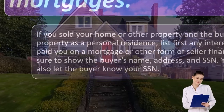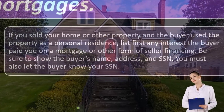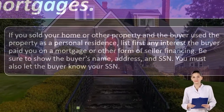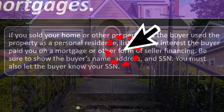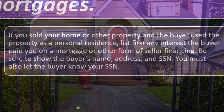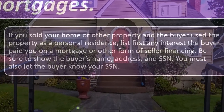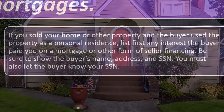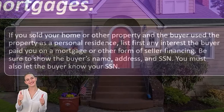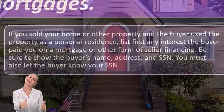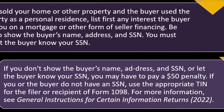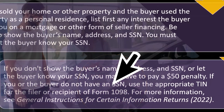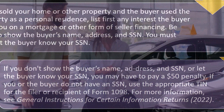If you sold your home or other property and the buyer used the property as a personal residence, list first any interest the buyer paid you on a mortgage or other form of seller financing. Be sure to show the buyer's name, address, and social security number. You must also let the buyer know your social security number. If you don't show the buyer's name, address, and social security number, or let the buyer know your social security number, you may have to pay a $50 penalty.